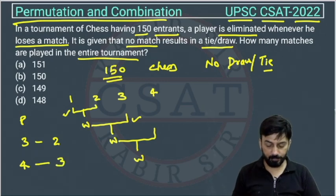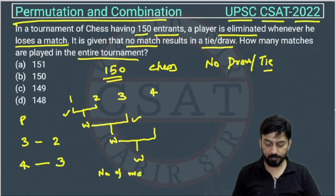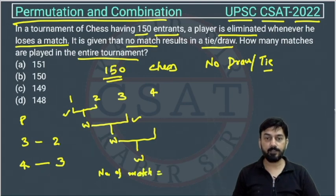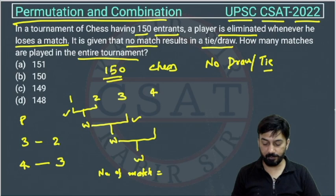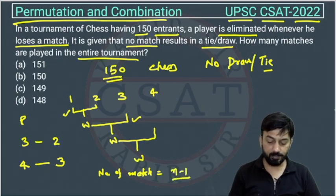Similarly, you can see the number of matches is always one less than the number of players. So if there are n players, the number of matches will be n minus 1.